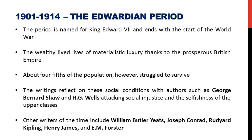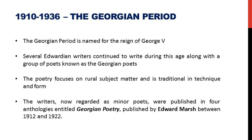We then move to the Edwardian period, named after King Edward the Seventh, which ends with the start of World War One. The writings reflect social conditions, with authors such as G. B. Shaw and H. G. Wells attacking social injustice and the selfishness of the upper classes. Other important writers include W. B. Yeats, Joseph Conrad, Kipling, Henry James and E. M. Forster. The Georgian period followed, during the reign of King George the Fifth. Several Edwardian writers continued writing alongside Georgian poets, and an important anthology entitled Georgian Poetry was published by Edward Marsh between 1912 and 1922.